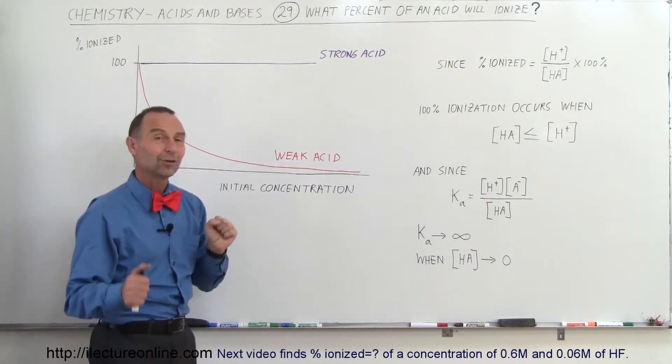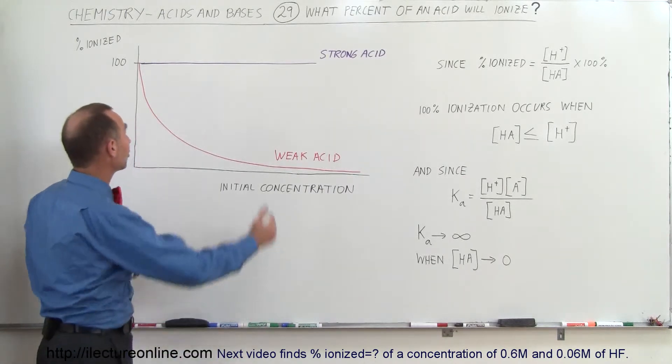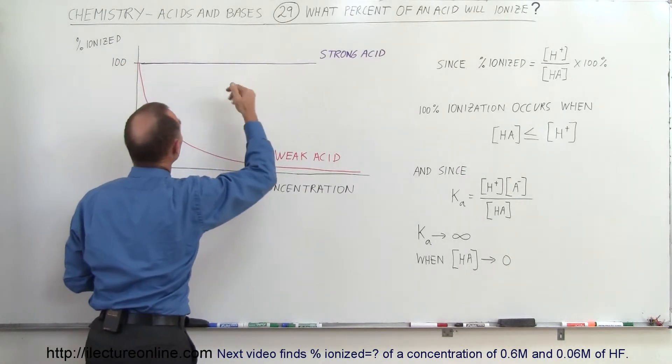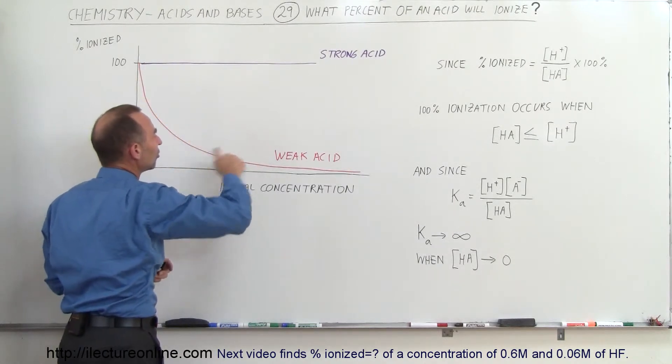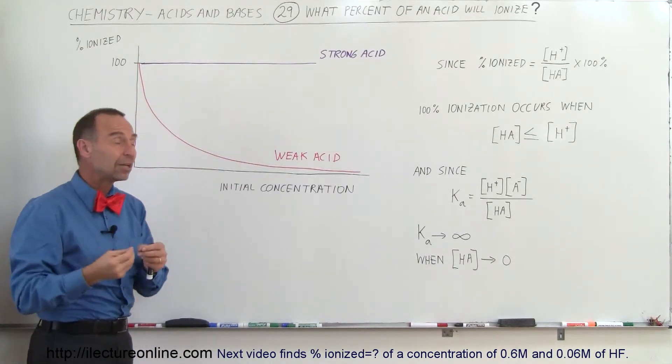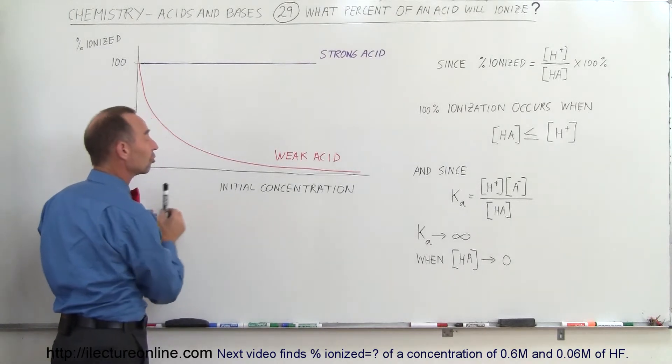So if you understood that, you're in good shape, because then you really understand how this works. And so for a strong acid, we don't have to worry, all of it ionizes. For a weak acid, we have to figure out what the percentage of the ionization is of the acid, what the final pH will be, based upon the original concentration or the initial concentration.